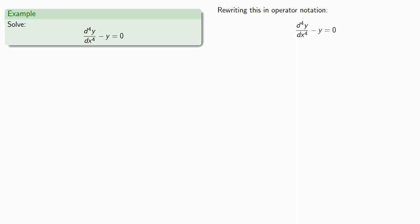Rewriting this in operator notation, our characteristic polynomial is d⁴ - 1. We can find the roots of the characteristic polynomial by setting it equal to 0 and solving.